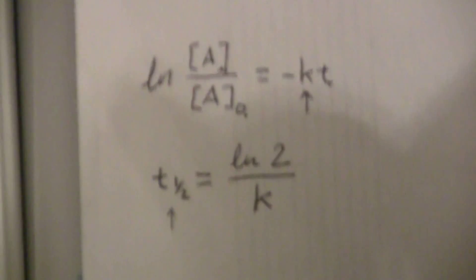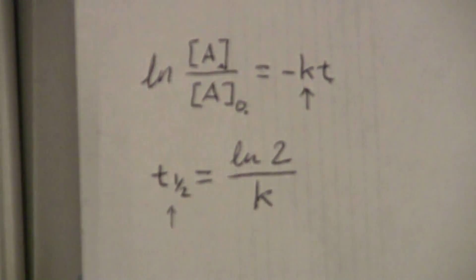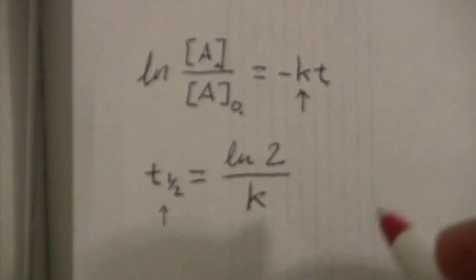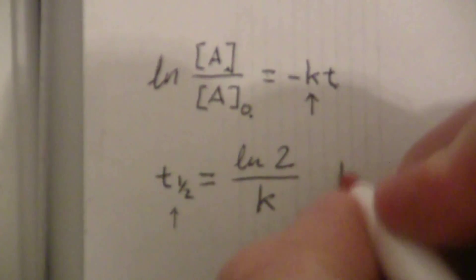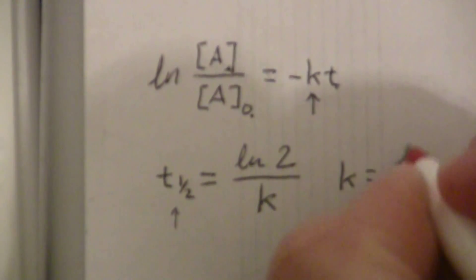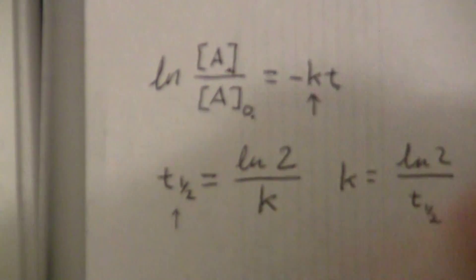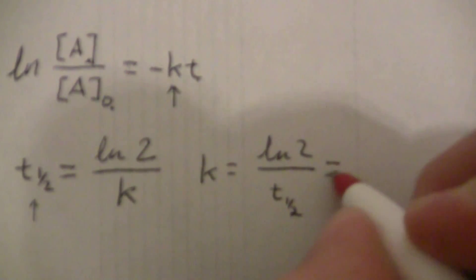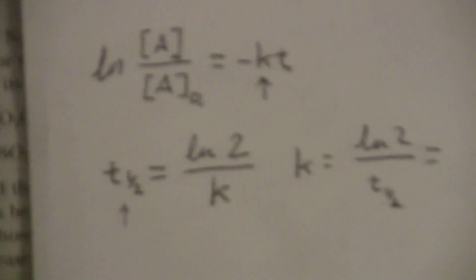So, let's go ahead and plug in our numbers. First, let me find K. If we just solve this for K, we'll have K equals LN of 2 over T1 half, and that will be, the T1 half was 245 minutes.